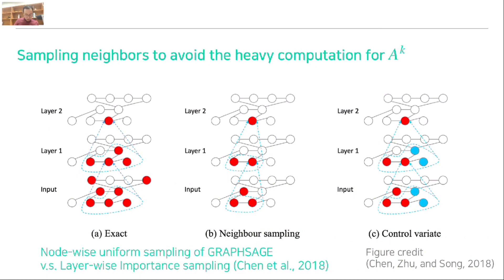Another way to avoid the heavy computation for A to the k is to use the sampling and mini-batch technique. For mini-batch learning, many previous works were proposed. Exact sampling means we don't sample neighbors and consider all the neighbors. This is very time-consuming, so we can sample neighbors when we aggregate.